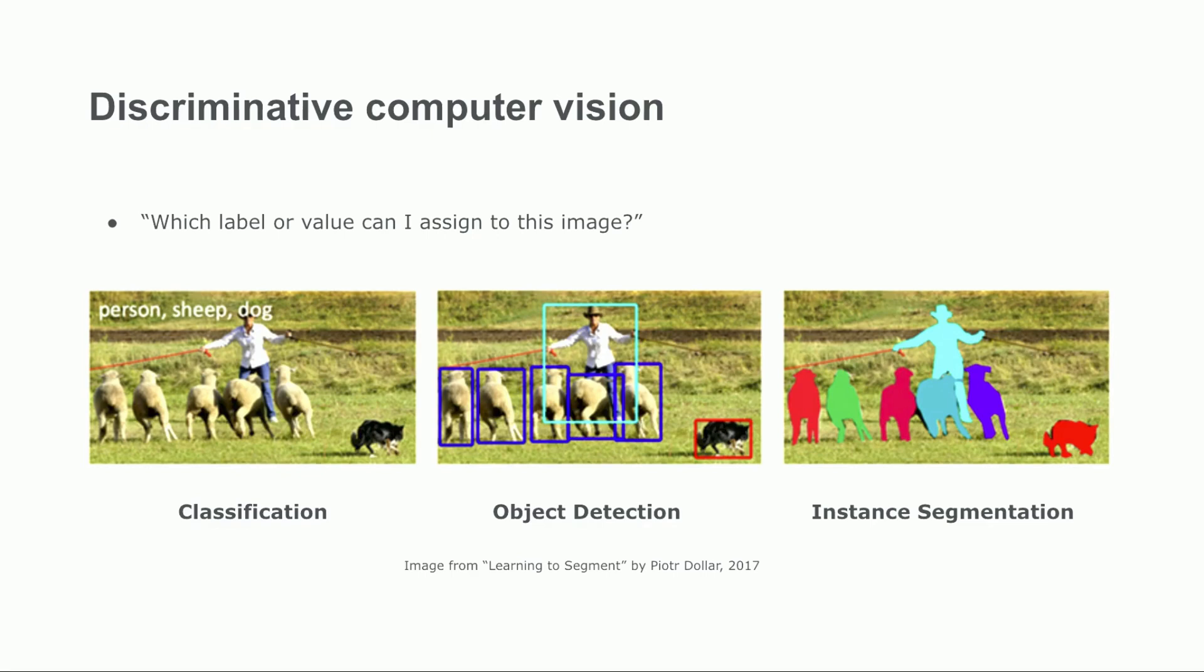In contrast, object detection models assign labels within bounding boxes, enabling us to localize the presence of objects in the image. These bounding boxes allow us to understand the relative position of objects and count them.